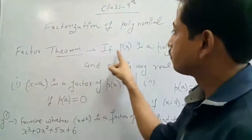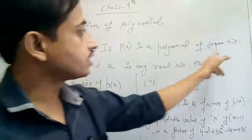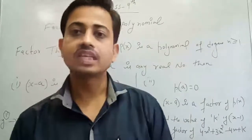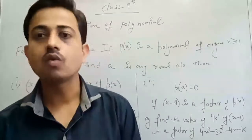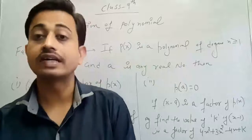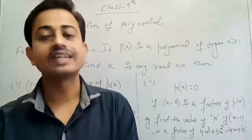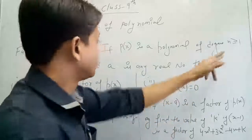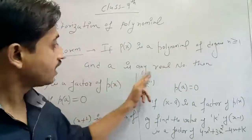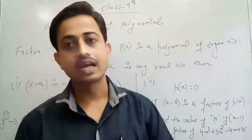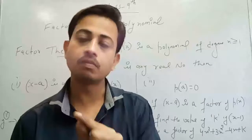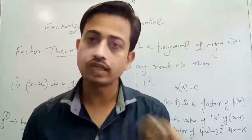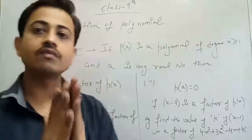Factor Theorem: If P(x) is a polynomial of degree n ≥ 1 — meaning you have a dividend polynomial whose degree is greater than or equal to 1; it may be linear, quadratic, cubic, or higher, but not a constant polynomial — and 'a' is any real number. Any number whose square is positive is a real number: natural numbers, whole numbers, integers, and rational numbers are all real numbers. So 'a' is a real number. Then we have two cases.